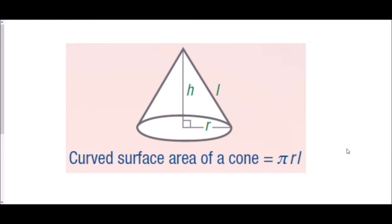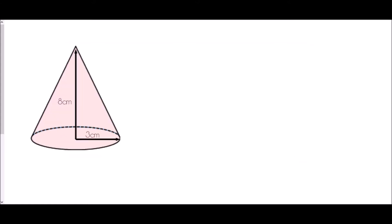If you are asked to do anything to do with the surface area of a cone in an exam, you will be provided with this formula: the curved surface area of a cone equals π r l. You'll also get a diagram showing that r is the radius of the circular base, h is the perpendicular height, and l is the slant length.